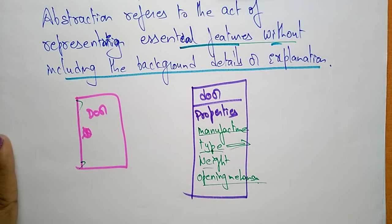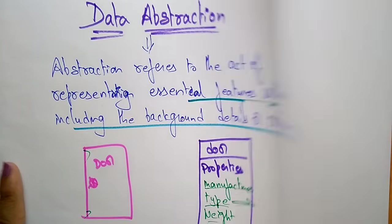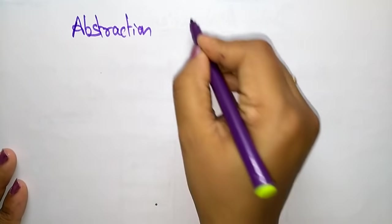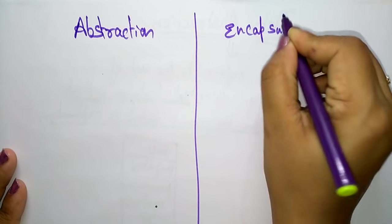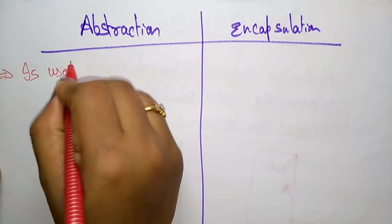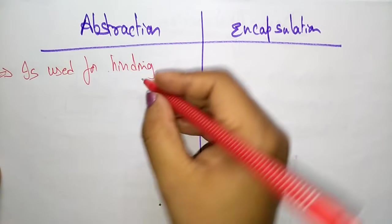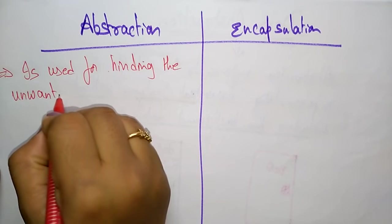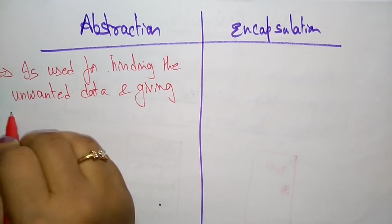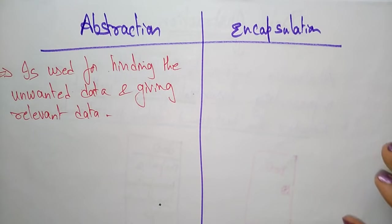Since classes use the concept of data abstraction, they are also known as abstract data type. Now let me explain the difference between abstraction and encapsulation. Abstraction is used for hiding — specifically, it is used for hiding the unwanted data. It's only hiding the unwanted data, not the complete data. Only unwanted data is hidden and relevant data is given, so only useful information is shown and unwanted data is hidden. That is what you call abstraction.